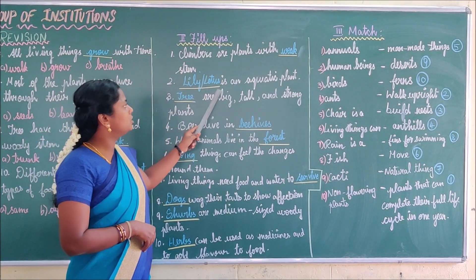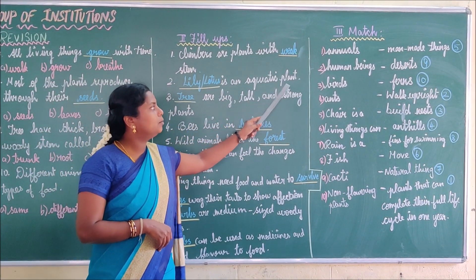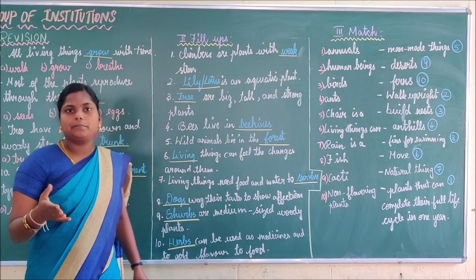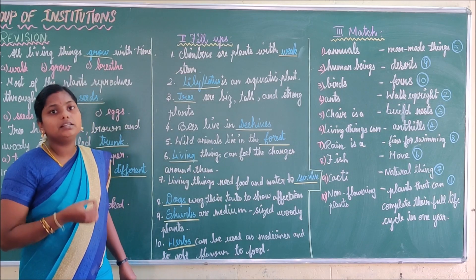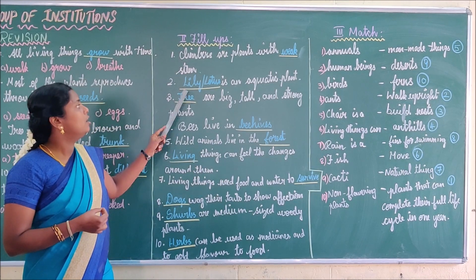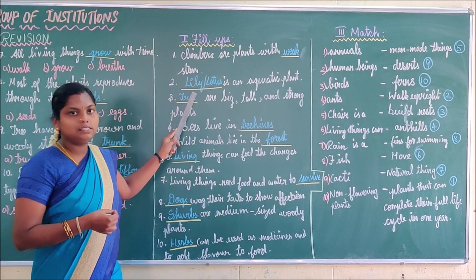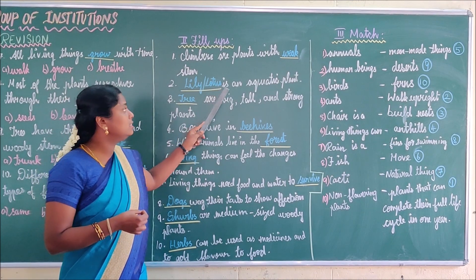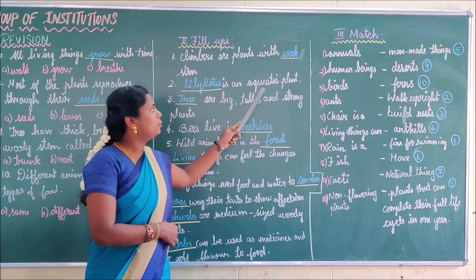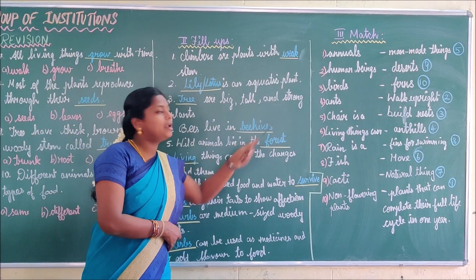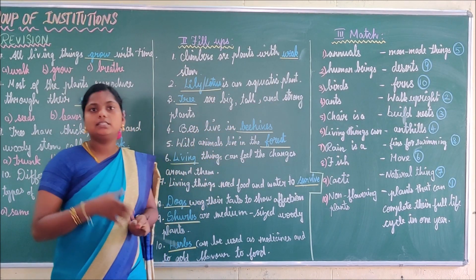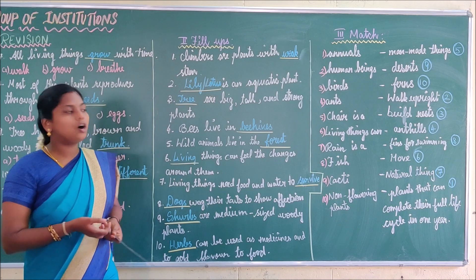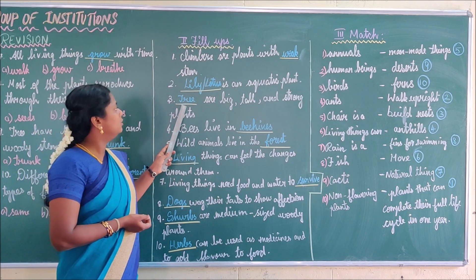Next fill-up: Blank is an aquatic plant. There are many examples. Water lily or lotus is an aquatic plant — that means it grows in the water.